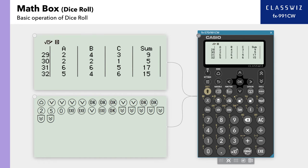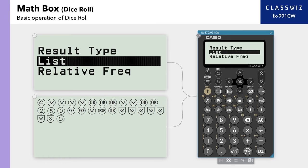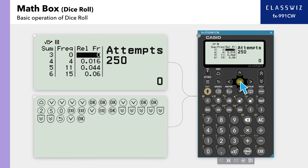To see the frequency and relative frequency of the sum of each roll, press Back to Return to Result Type and select Relative Frequency. The screen shows the frequency and relative frequency of the sums 3 to 18 when rolling three dice 250 times.